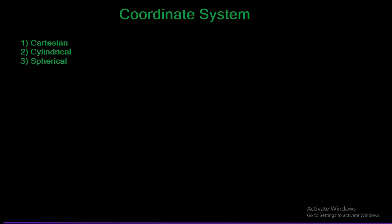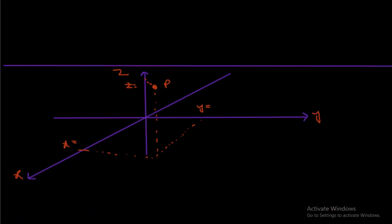Let us start by visualizing the three coordinate systems. The first coordinate system is the Cartesian coordinate system. Let us assume a point P in the space xyz plane. In order to reach that point, we must move in the x-direction, the y-direction, and then to the z-direction — the z-height.